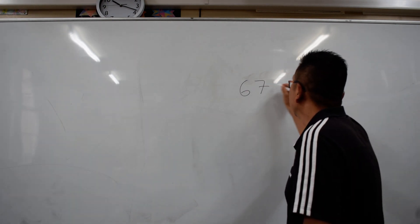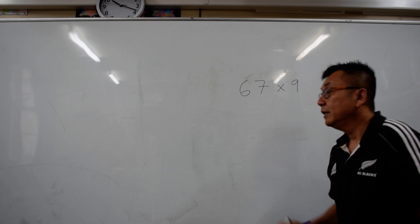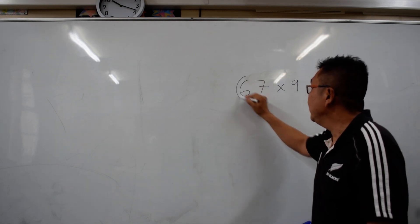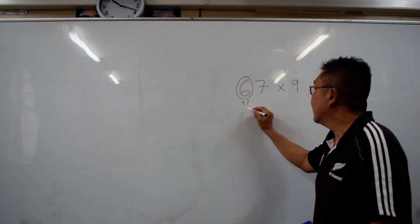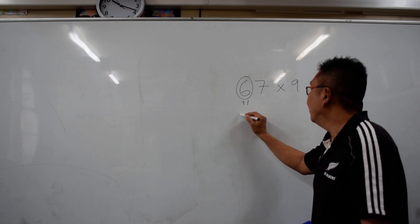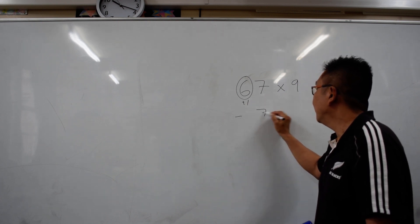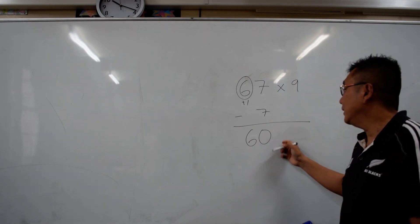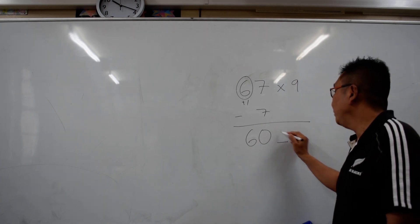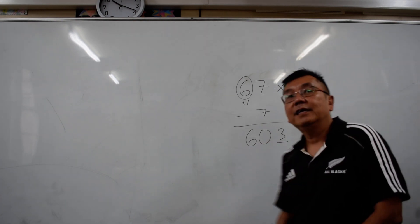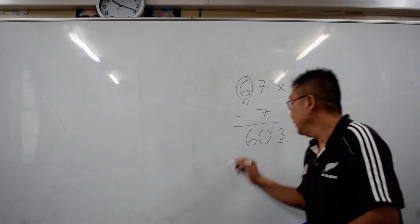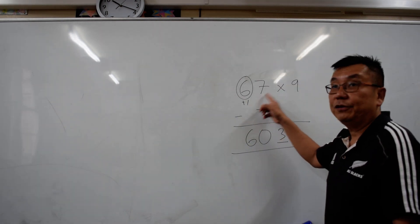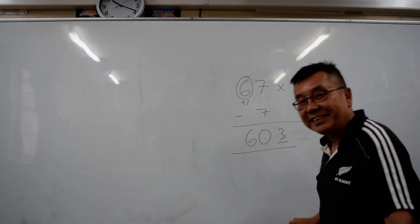67 times 9. You just need to increase the 6 by 1, so it becomes 7. And then you subtract 7 from 67, it becomes 60. And the last number has to be 3 because these 3 numbers must add up to 9. So the answer is 603. That is how you do a 2-digit multiplication of 9.